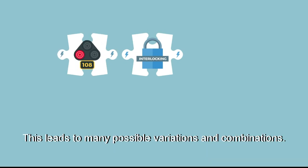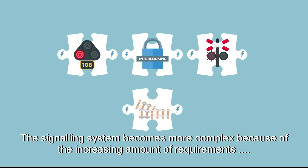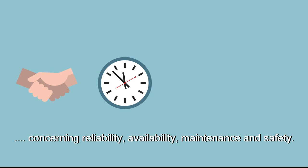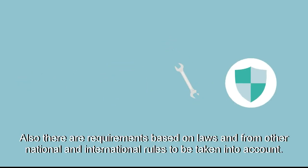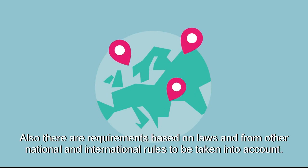This leads to many possible variations and combinations. The signaling system becomes more complex because of the increasing amount of requirements concerning reliability, availability, maintenance and safety. Also, there are requirements based on laws and from other national and international rules to be taken into account.